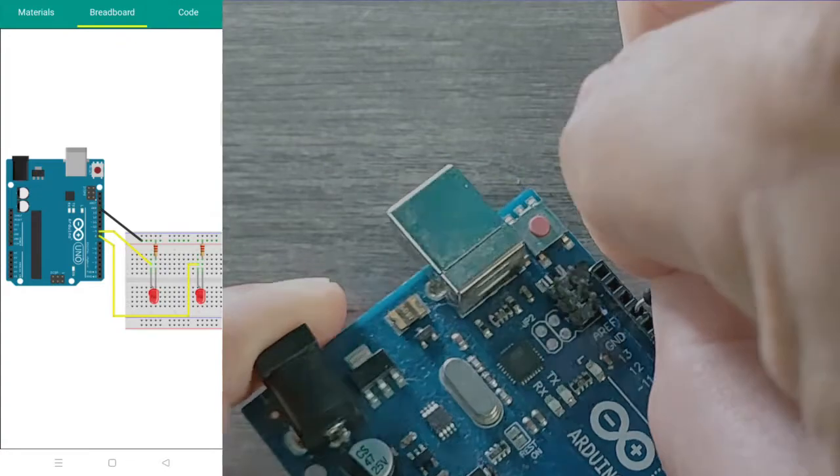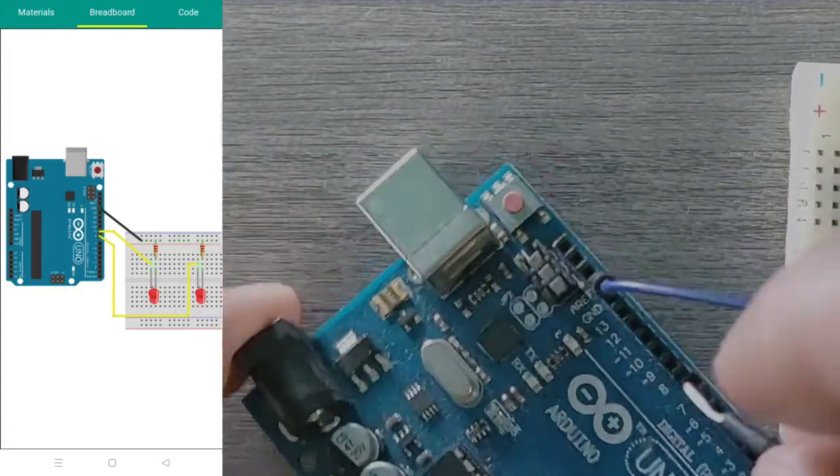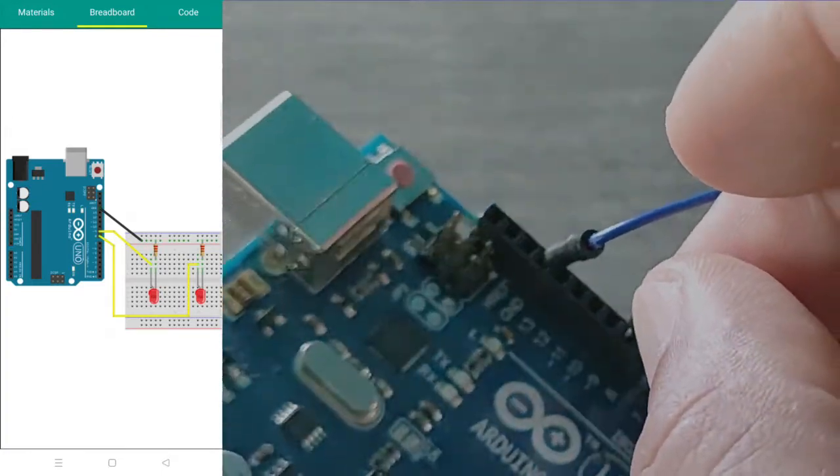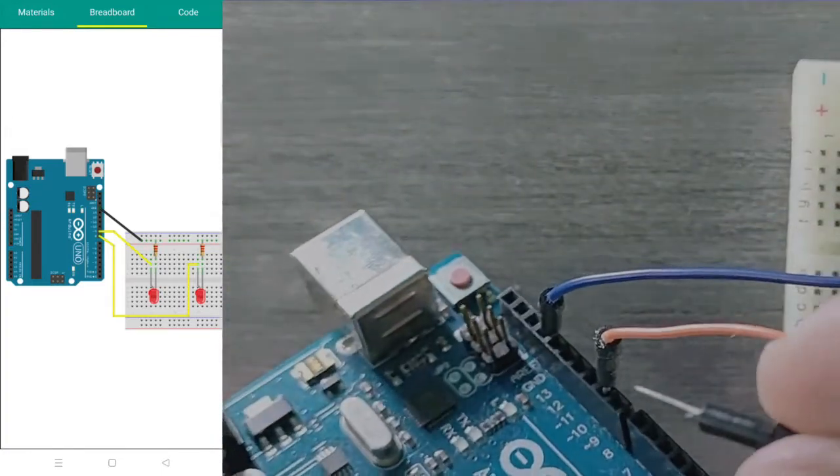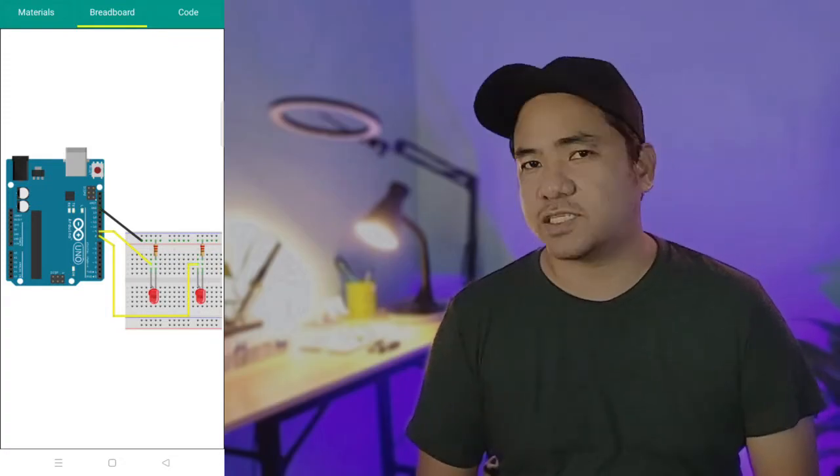When we connect the resistors to the power rails, both will now be connected to the ground of the Arduino. Again, this is just one way to make the connection. You may use another method to accomplish this. As long as the resistors on the breadboard are connected to the GND on the Arduino, everything will work out just fine.